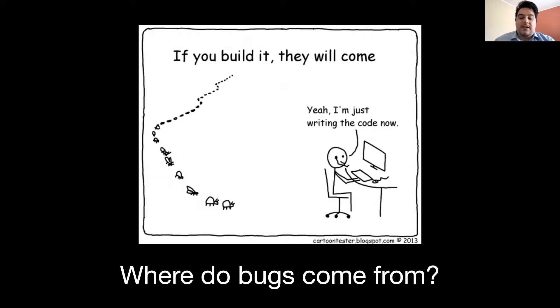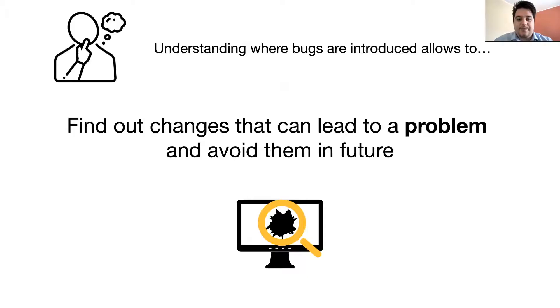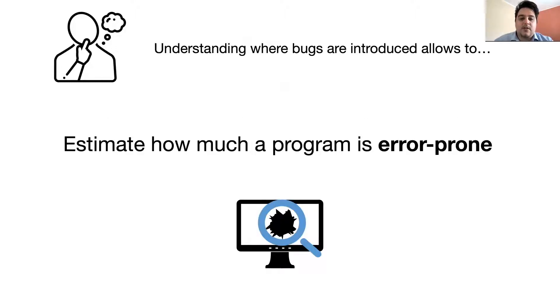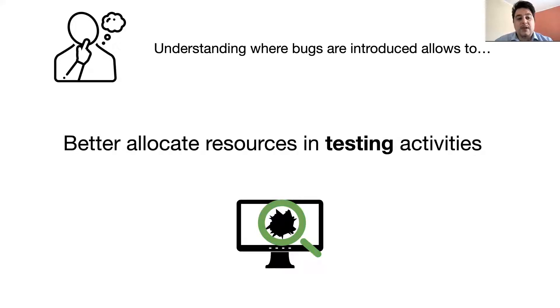Where do bugs come from? There are a lot of studies investigating how bugs are introduced and why we need to understand this. It allows, for example, to find out changes that can lead to a problem and avoid them in future. Also, to estimate how much a program is error-prone and to better allocate resources in testing activities.